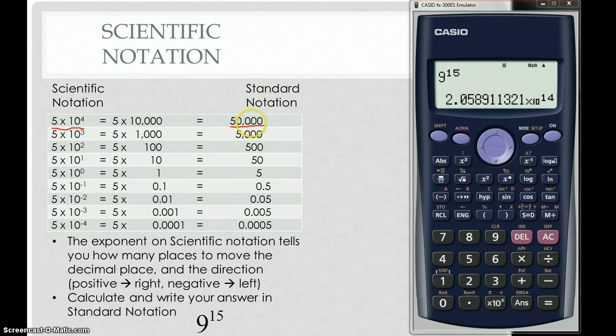So I come over here, and I take my 5, and I put my decimal point, and then I move it 4 places, 1, 2, 3, 4, and I put 4 zeros in there, 1, 2, 3, 4. And so 5 times 10 to the 4th is the same as 50,000.